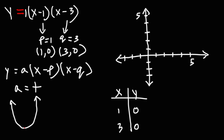If it opens upward, it's going to have a minimum value, which is the vertex. The coordinates of the vertex are h comma k. The x-coordinate of the vertex, which is h, is the average of p and q.